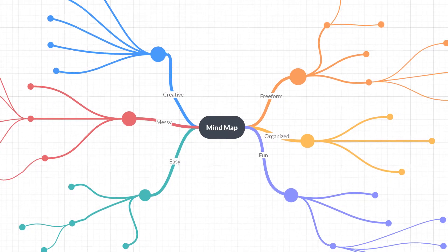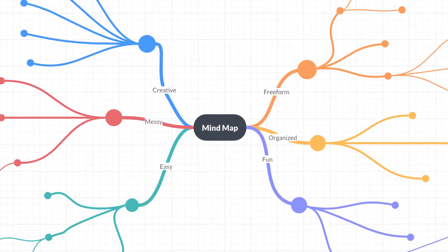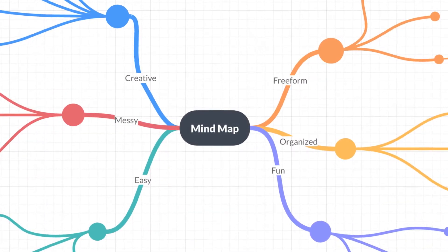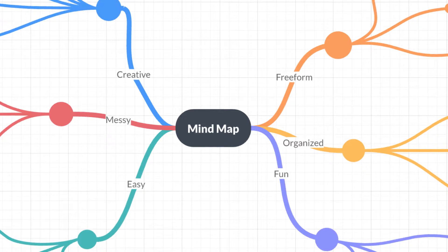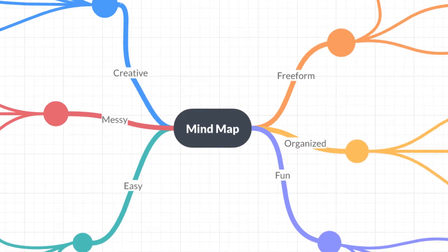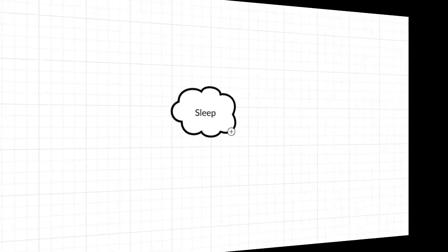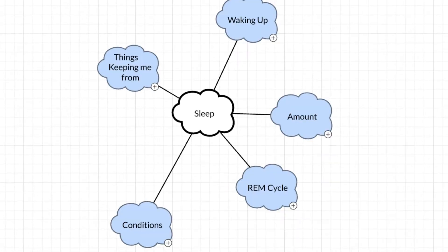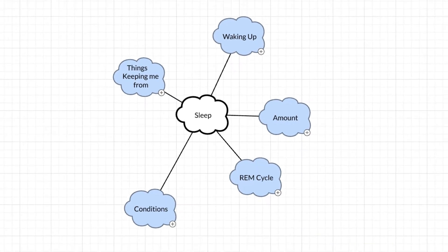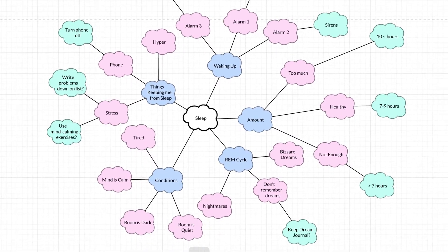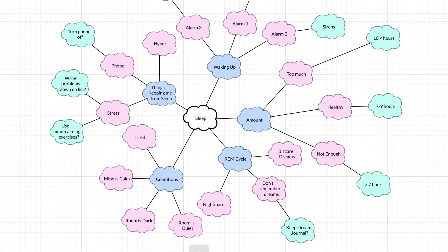A mind map looks suspiciously like a brain network. This isn't a coincidence — mind maps literally model the way you think. They're tools to help you expand your thoughts from a single topic into a web of connected ideas.